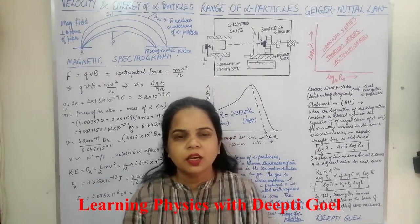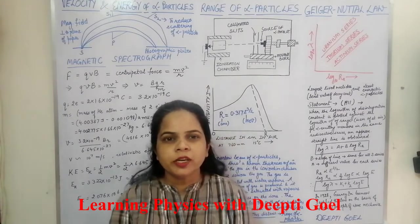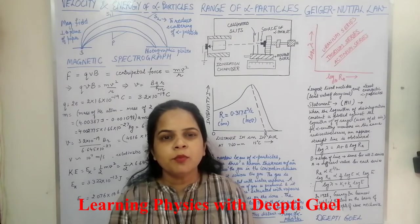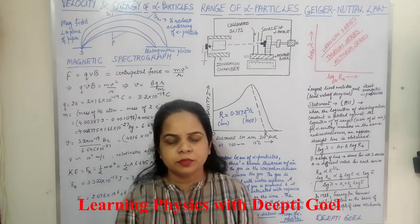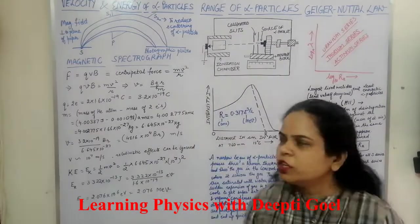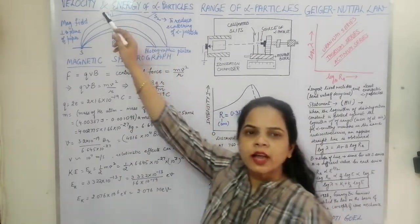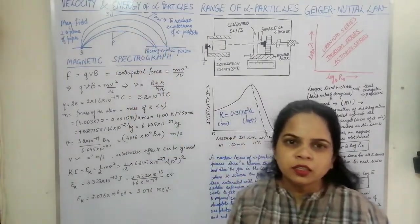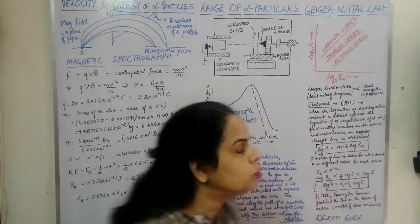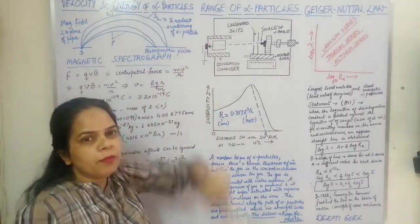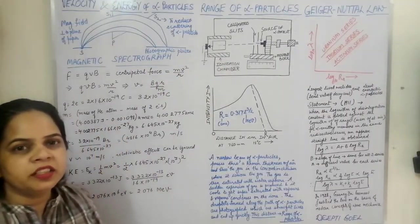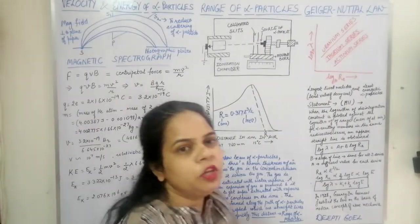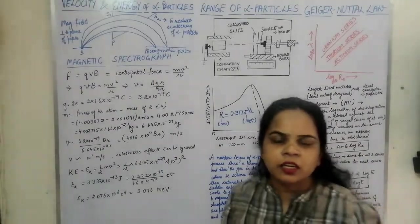Hello friends. Today we shall discuss some properties of alpha rays — specifically how to calculate the velocity and energy of alpha particles, the range of alpha particles, and what is the Geiger-Nuttall law.